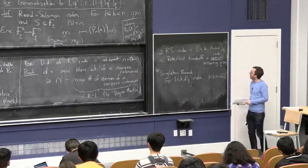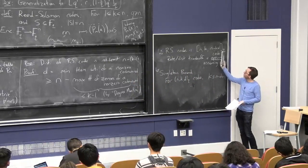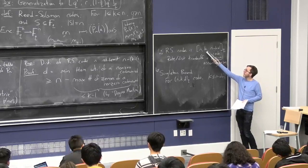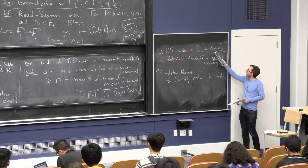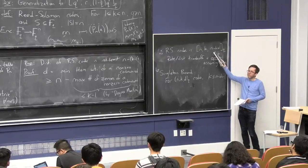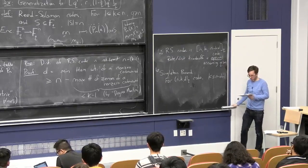So as I said, this is a great code if you're willing to have a large alphabet size. For example, you can take k to be n over two, and then your rate is a half, and the minimum distance is also like a half times n, which is terrific.